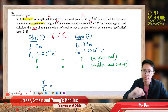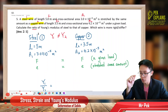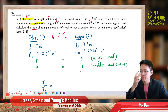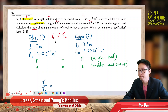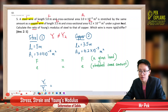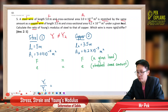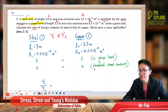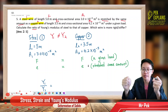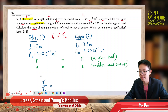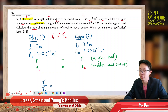We want systematic work. Now, the problem says 'stretched by the same amount.' What does it mean? Stretch by the same amount means they have the same elongation — you stretch or extend by the same amount, so they have the same extension. That's the first clue: E1 is equal to E2.